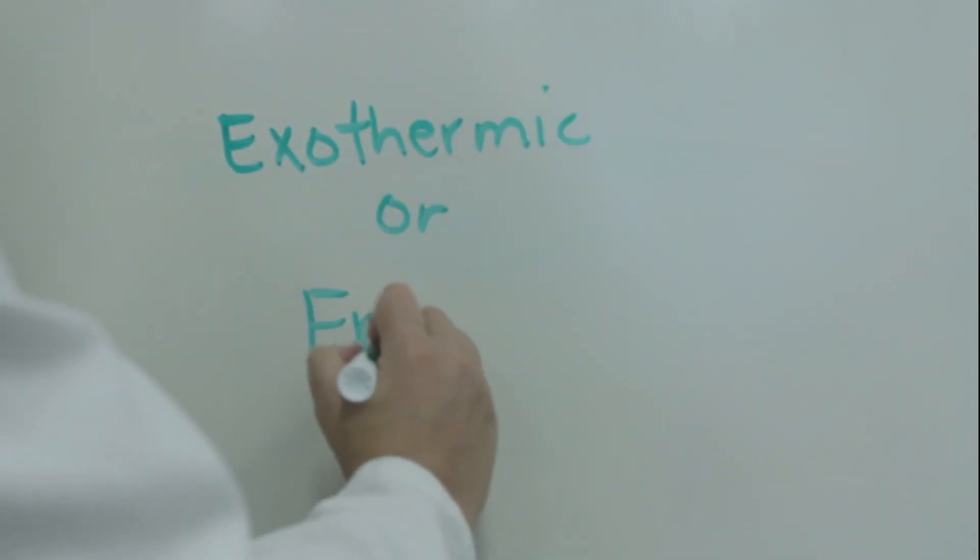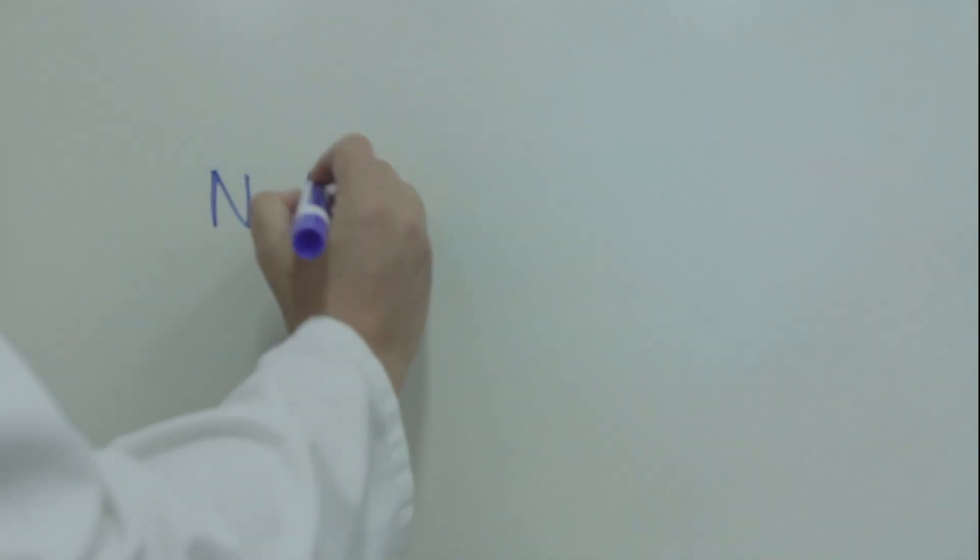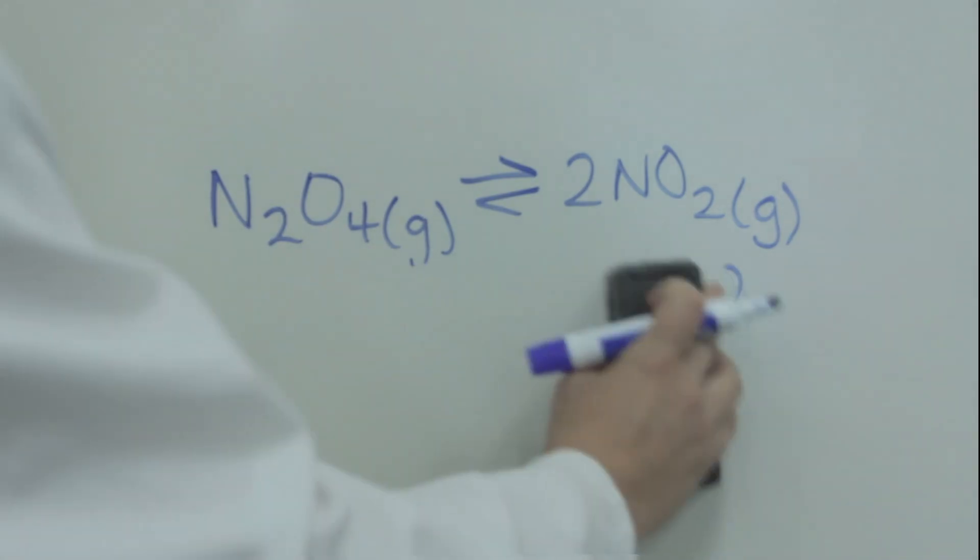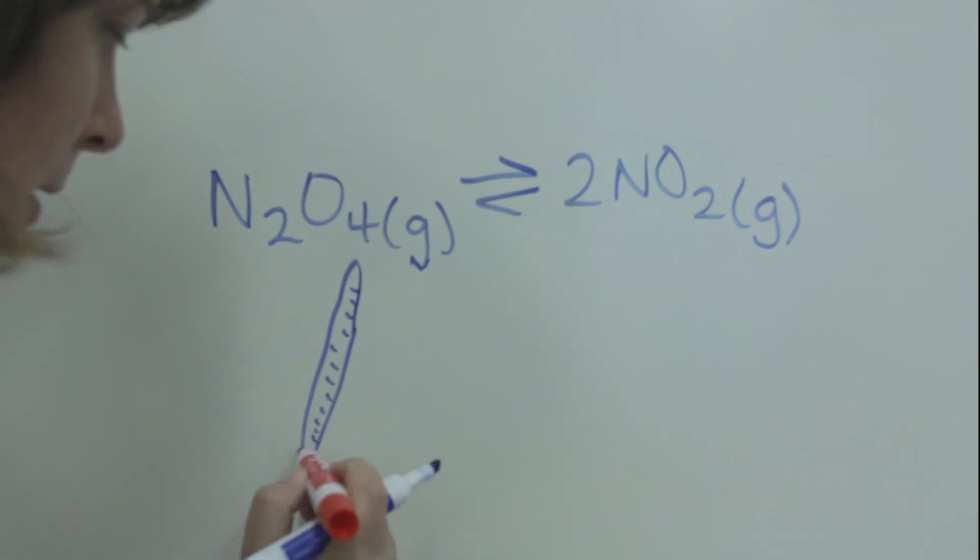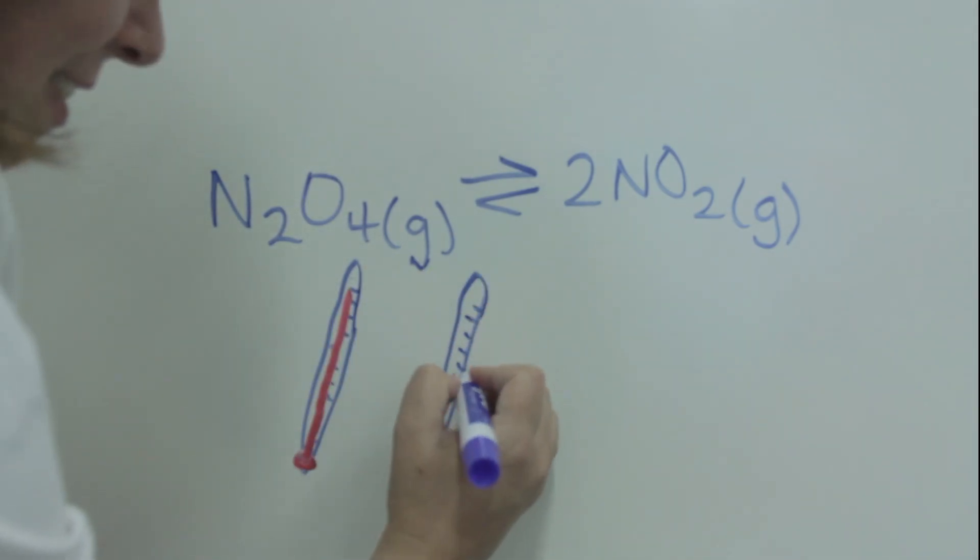Next, we will try to determine if an equilibrium is exothermic or endothermic. The equilibrium we'll study is N2O4 in equilibrium with NO2. N2O4 is colorless while NO2 is brown. We'll observe this equilibrium at three different temperatures.